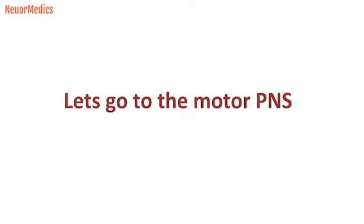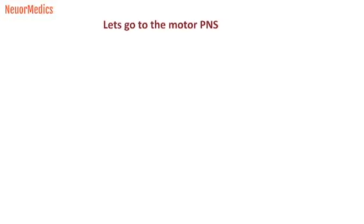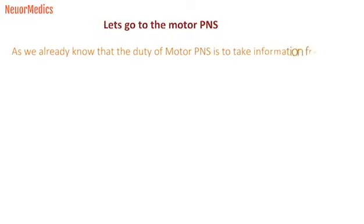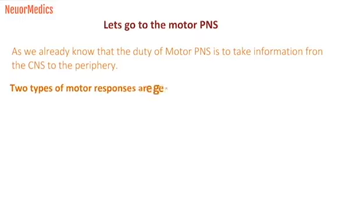Now I am going to discuss about the motor peripheral nervous system. As we already know, the function of the motor peripheral nervous system is to take the information from the central nervous system to the peripheral parts of the body. The motor responses coming from the motor peripheral nervous system are of two types.